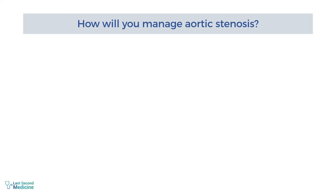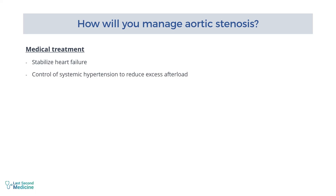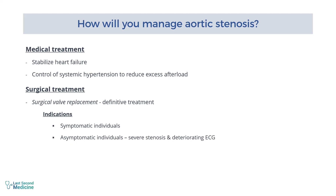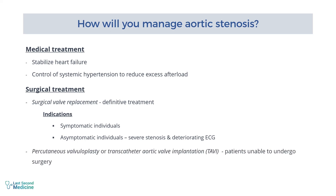How do you manage aortic stenosis? Medical treatment may stabilize heart failure, and control of systemic hypertension is important to reduce excess afterload. Surgical valve replacement is the definitive treatment. Prompt valve replacement should be done in symptomatic individuals. If the patient is asymptomatic, surgical valve replacement is still considered if aortic stenosis is severe and there is a deteriorating ECG. If the patient is not medically fit for surgery, percutaneous valvuloplasty or transcatheter aortic valve implantation should be performed.